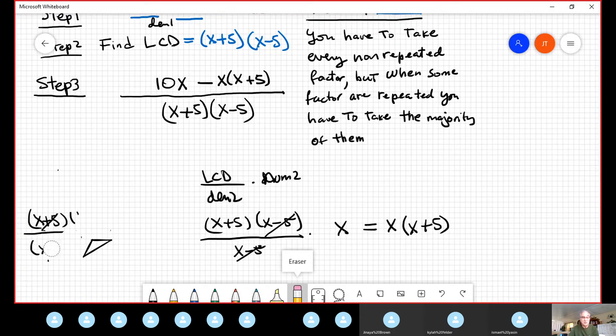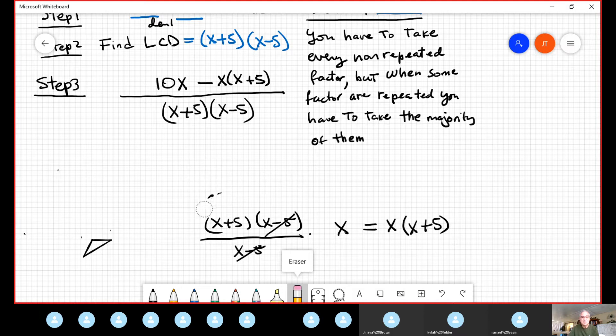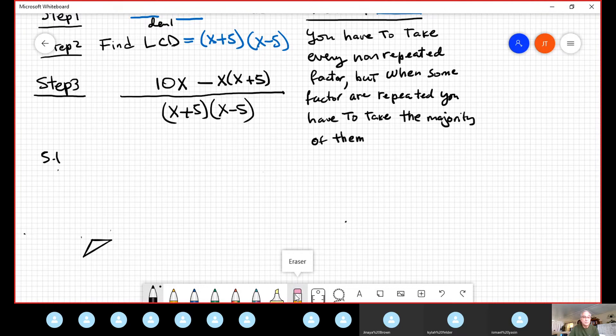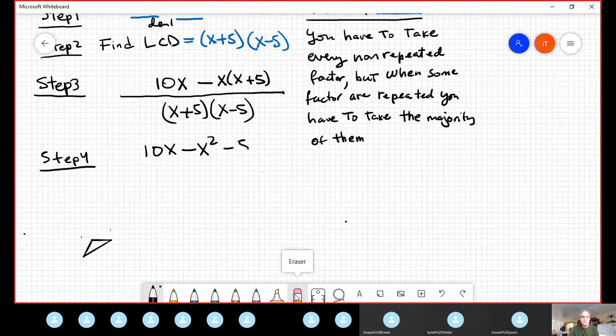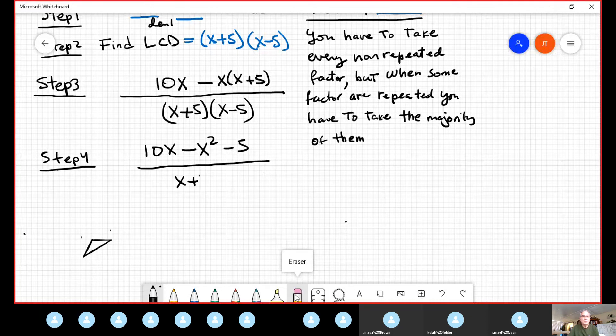Well, we continue with the last step. It's super easy. Because the only thing you should do is remove the parentheses. Apply distributed property. And maybe combine or no. Step four is remove the parentheses. 10x stays. Minus x squared minus five. Divided by x plus five, x minus five.